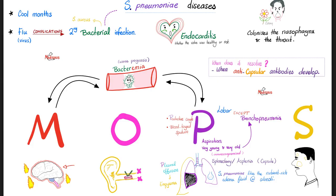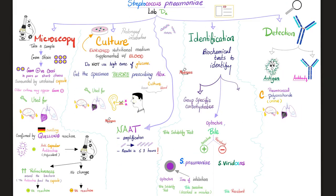Now let's talk about the diagnosis of Streptococcus pneumoniae. Please recall the diseases: meningitis, otitis, pneumonia, sinusitis. Bacteremia can happen with meningitis or pneumonia. The diagnostic approach: microscopy, culture, NAAT, identification, and detection.